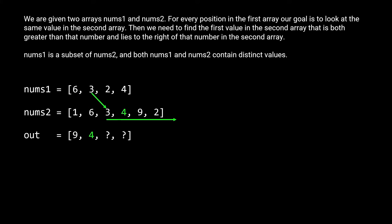Then we move on to the 3. The first number to the right and greater than the 3 is a 4, so we fill in the second position in our output array with a 4. For the 2, there isn't a number to the right and greater than the 2, so since there isn't a number we just put a negative 1 in the output. And for the final number 4, the first number that is greater than the 4 and to the right of it is the 9, so the array 9, 4, negative 1, 9 is our answer and that is what we'd return.